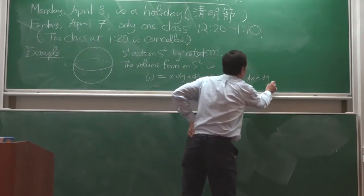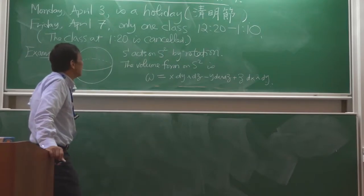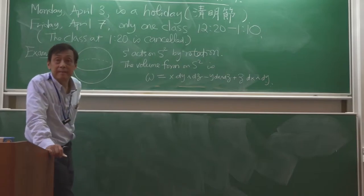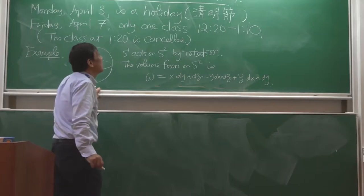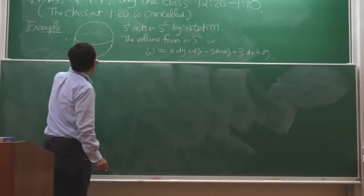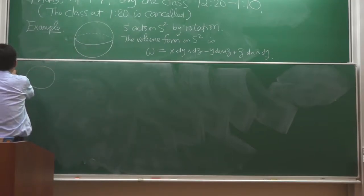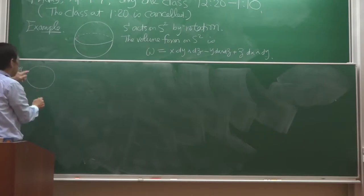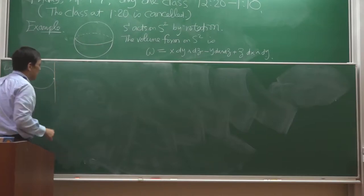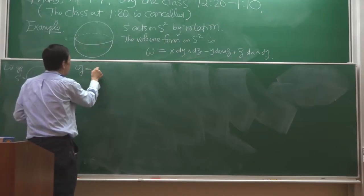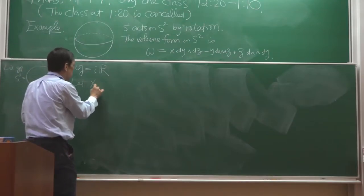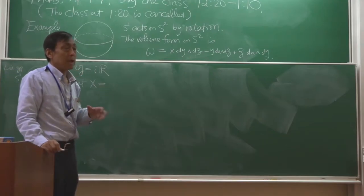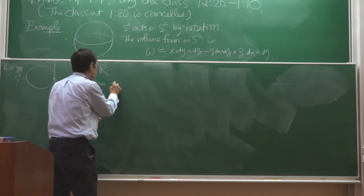Now let's choose an X — a non-zero element of the Lie algebra. The Lie group here is S¹, so the Lie algebra is iℝ, an imaginary line. I can choose any non-zero element, so I can choose i, but I'm going to choose minus 2πi.